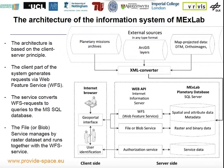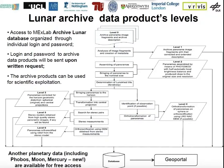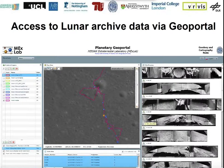For the uploaded images, we developed our information system — here you can see the structure of this system. All archived data products are now available, but unfortunately the archived data are accessible only via special request. In our geoportal, data are available for the Moon, Mercury, and new products — including roughness data products for the north polar area. This data is freely accessible. You can see examples of assembled panoramas, and all data can be downloaded.